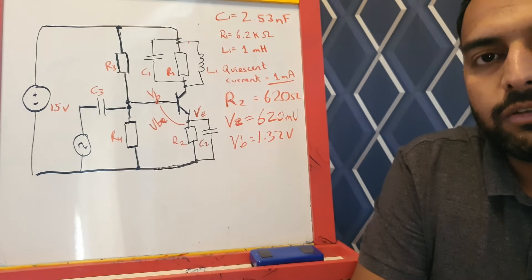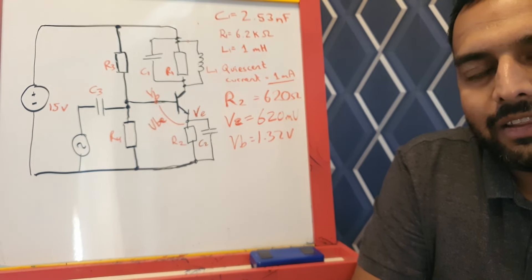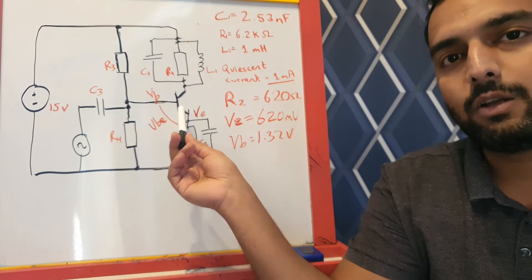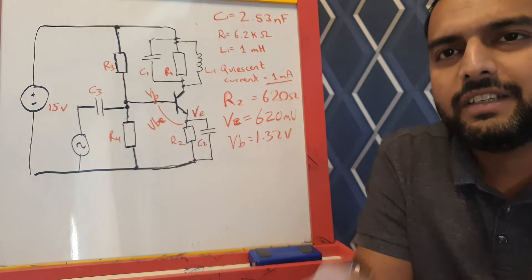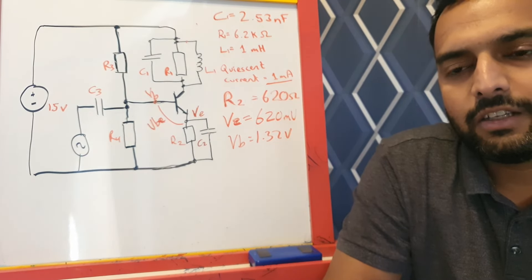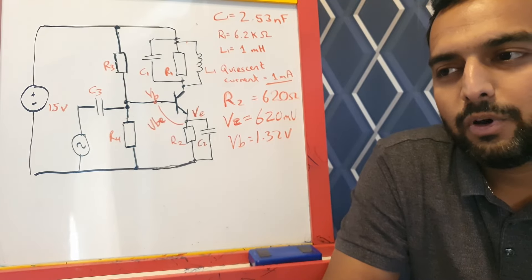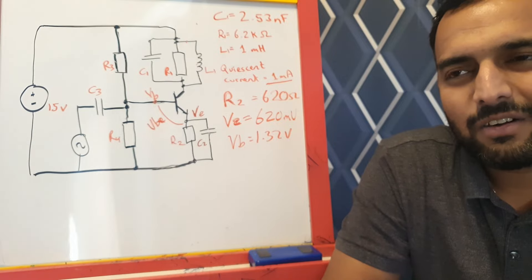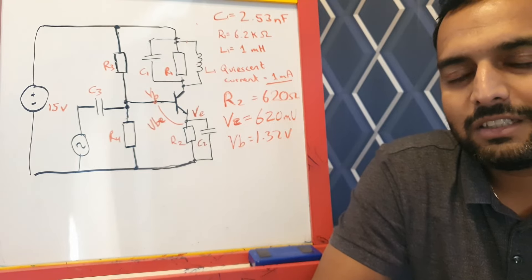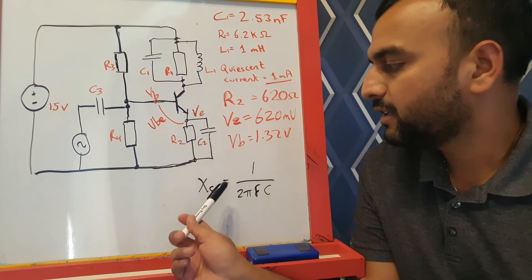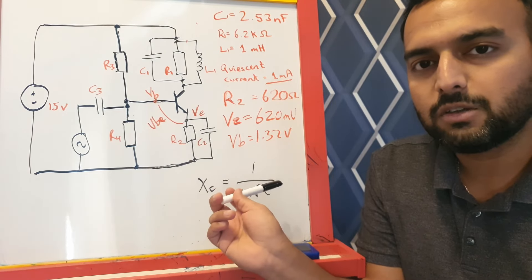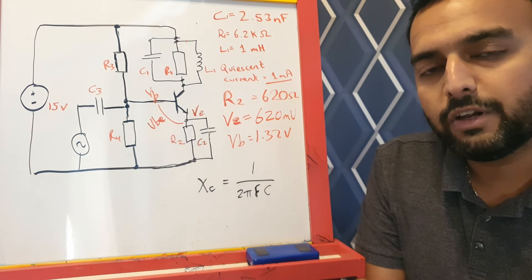To calculate C2, the emitter bypass capacitor, we need to make its impedance small at the lowest frequency of interest — 100 kilohertz — compared to the intrinsic emitter resistance re, which is approximately 25 ohms. We aim for about 2.5 ohms, which is one tenth of re. Using the capacitive reactance equation Xc = 1 / (2πFC), with Xc = 2.5 ohms and F = 100 kilohertz, we can rearrange to calculate C.